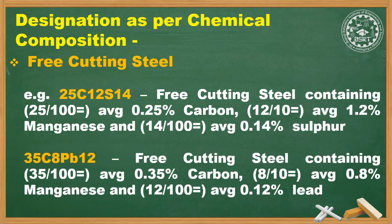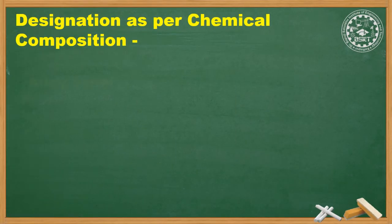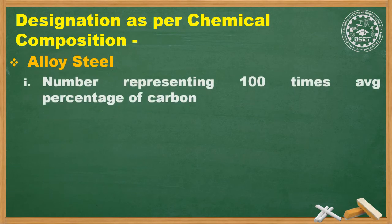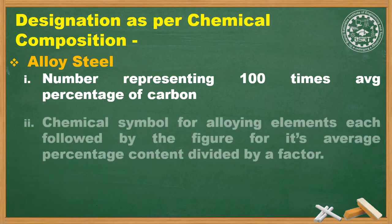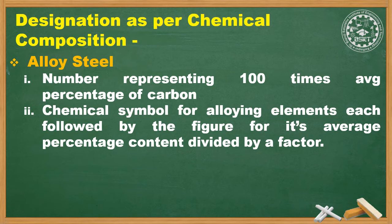For example, 35C8Pb12 contains 0.35% carbon, and 8/10 = 0.8% manganese, with lead as the free-cutting element.